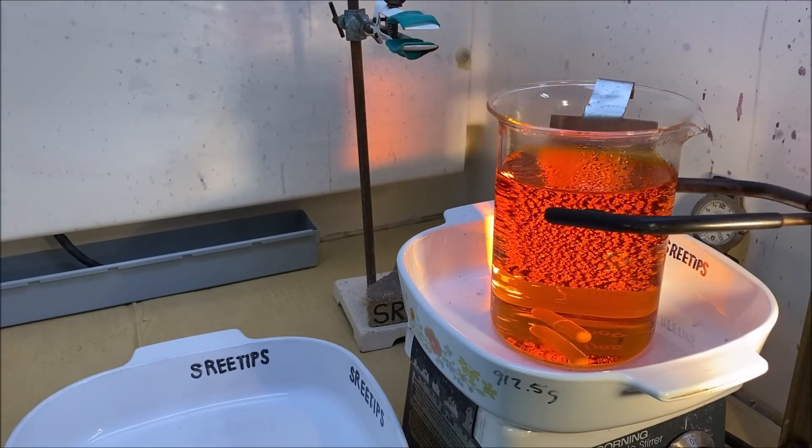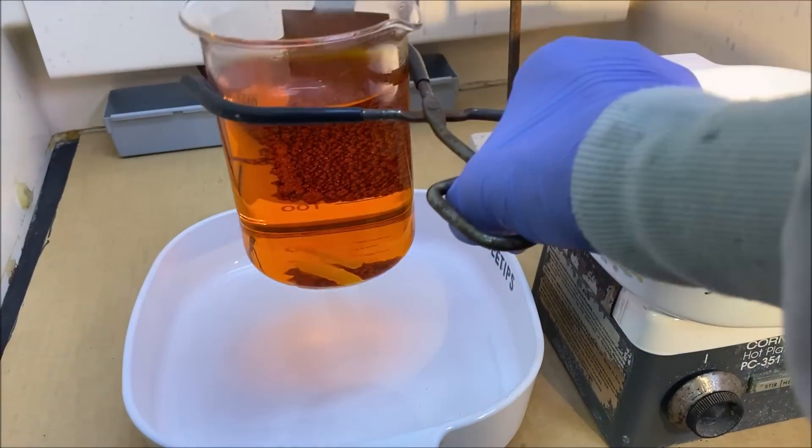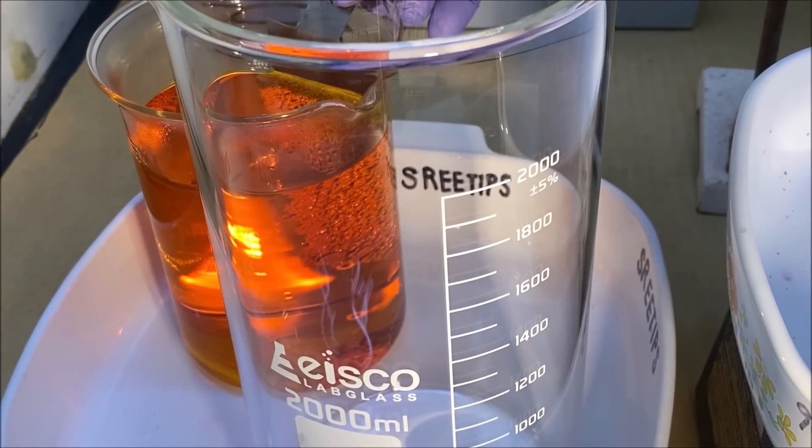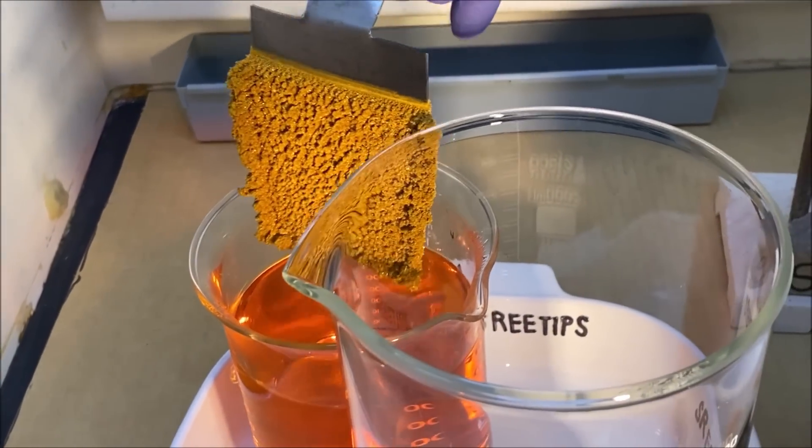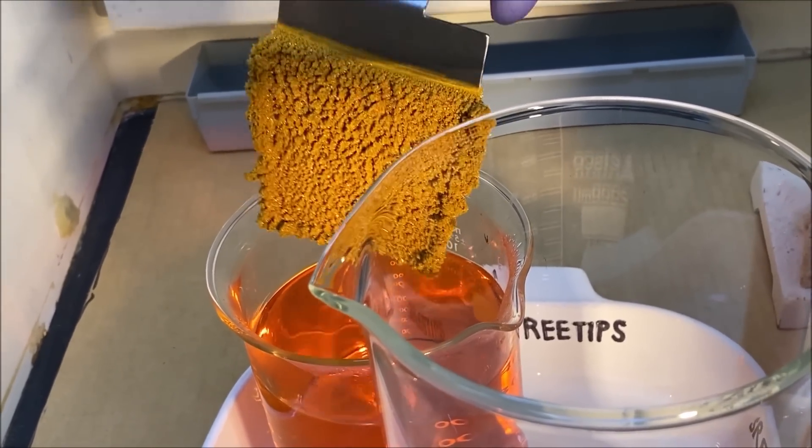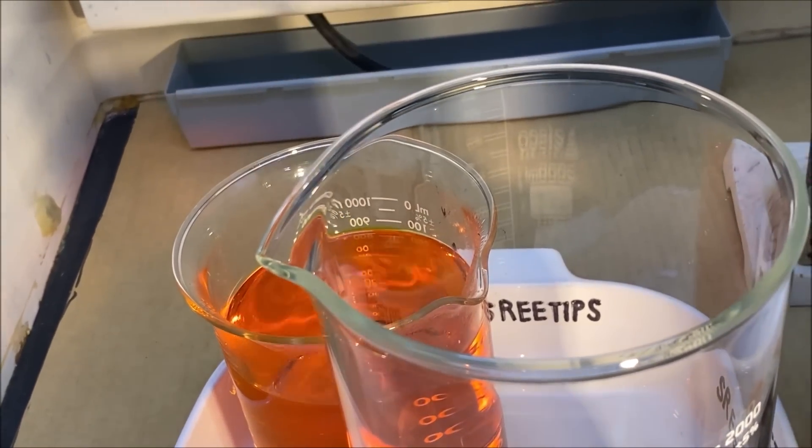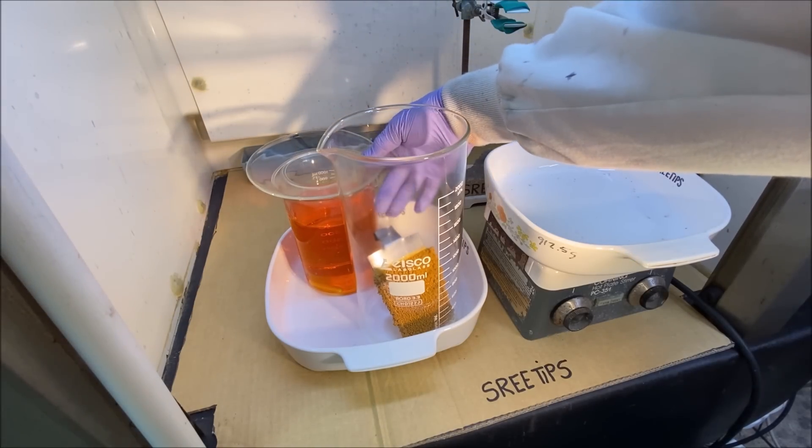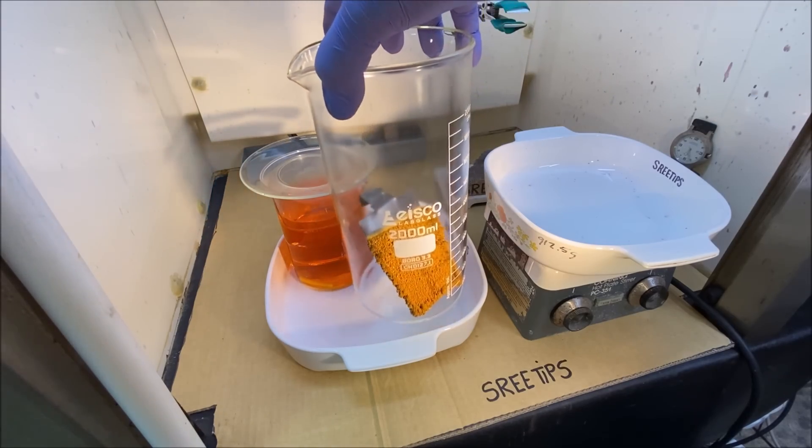I'm going to take our beaker with our gold in it and set it down here out of the way. Let's take our gold cathode and stick it in this beaker. Now we're going to cover up the electrolyte. We can recover the gold from that. This orange liquid is going to have a bunch of gold in it.